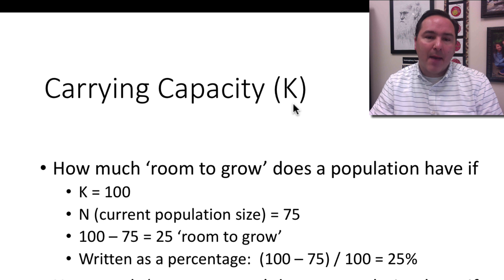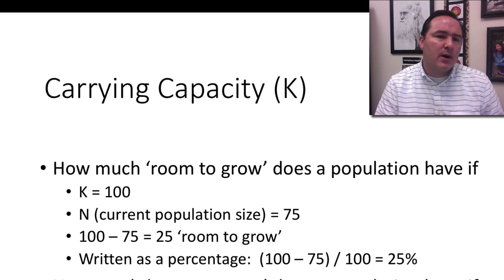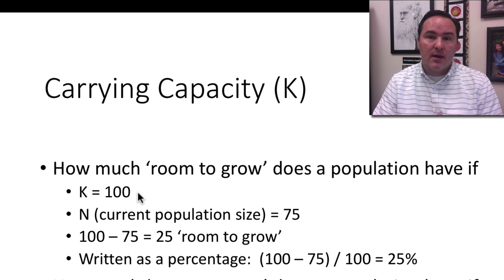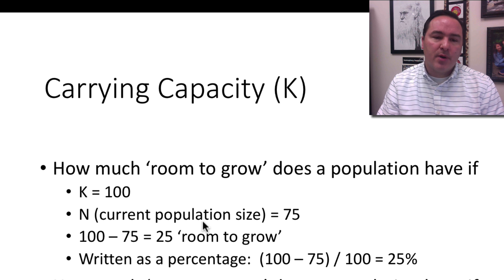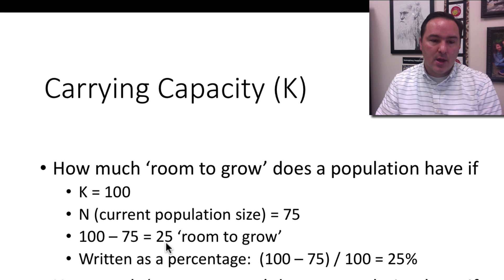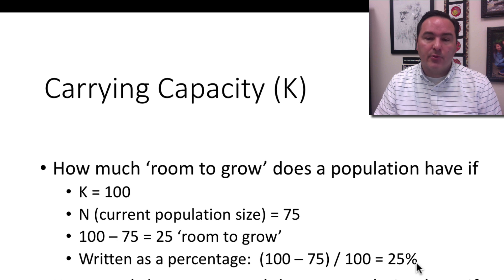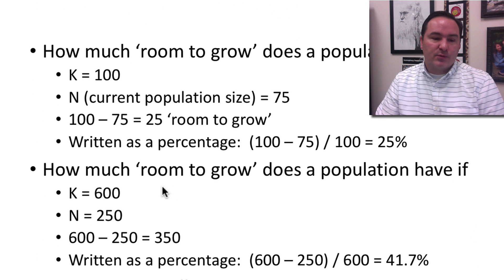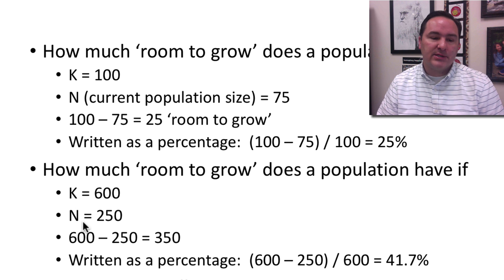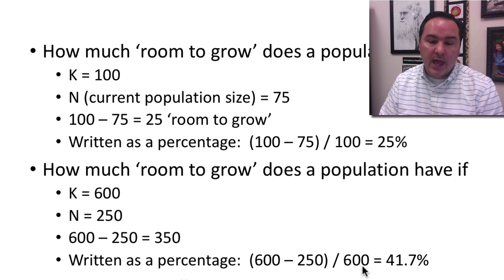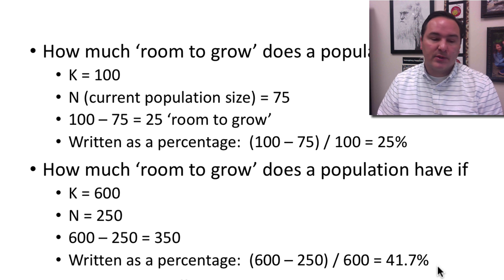If we take the carrying capacity K and think about how it works into our equation, we ask: how much room is there to grow? Let's simplify — say we have K equal to 100, and the current population size N is 75. So 100 minus 75 is 25: that's the room to grow, which we write as a percentage: 25 divided by 100 equals 25%. For another example, K equals 600 and N equals 250: 600 minus 250 is 350, which divided by 600 equals about 41.7%. Written generically, the room-to-grow modifier is K minus N, all over K.